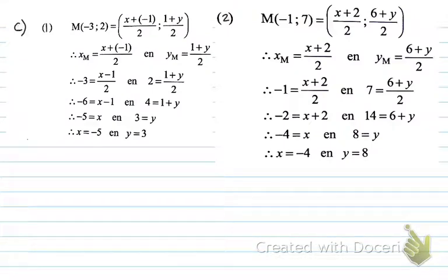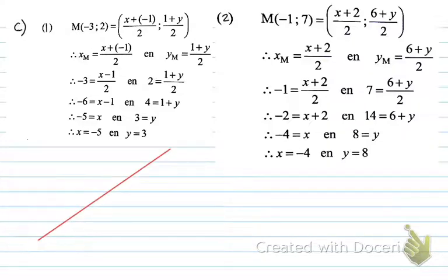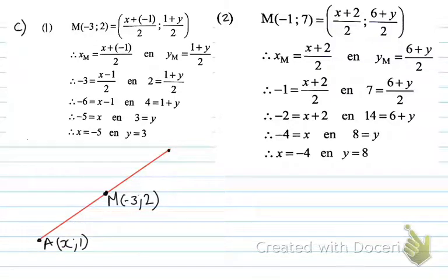Next, number C. Let's read the question together: answer the following questions; you may want to draw a diagram to help visualize the scenario. Number 1 says: if M is the midpoint of a line segment, with M(-3, 2) in the middle, joining the points A(x, 1) and B(-1, y), calculate the values of x and y.